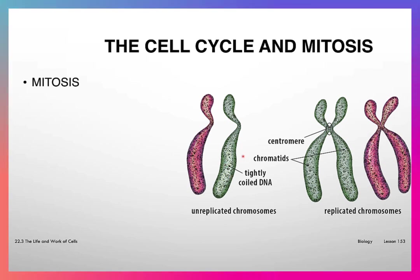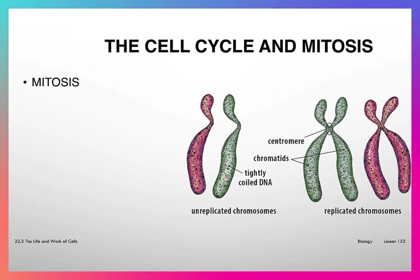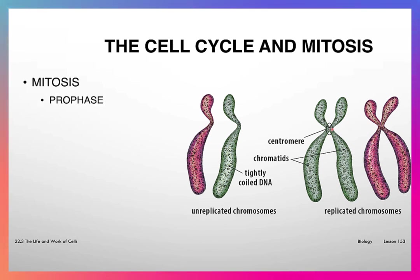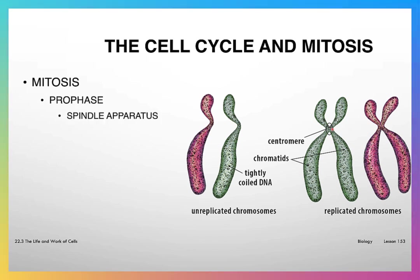During mitosis, you start with unreplicated chromosomes with tightly coiled DNA. The DNA replicates and forms two paired chromosomes connected at a site known as the centromere — one green and one reddish chromosome, each forming two identical paired DNA strands connected at the centromere. The initial phase of mitosis is called prophase, during which the spindle apparatus forms.